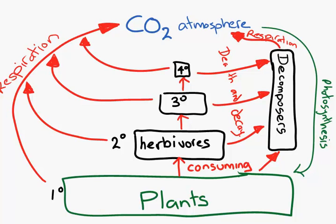There is one more arrow we can add to this. Decomposers also die, so we could add one more arrow showing that decomposers decompose other decomposers when they die. And there's my finished carbon cycle diagram for within an ecosystem.